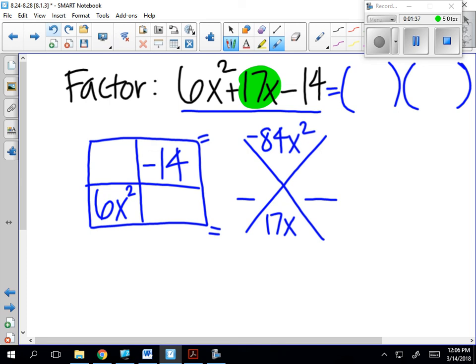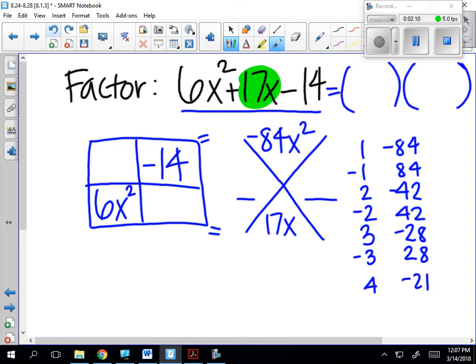My suggestion is to make a list of the factors. So 1 and negative 84, negative 1 and 84, 2 and negative 42, negative 2 and 42. What I'm doing is just taking a calculator and dividing by 2, dividing by 3, dividing by 4, dividing by 5. You can just keep doing that and you only need to include the whole number factors. 3 and negative 28, negative 3 and positive 28, 4 and negative 21, negative 4 and positive 21.